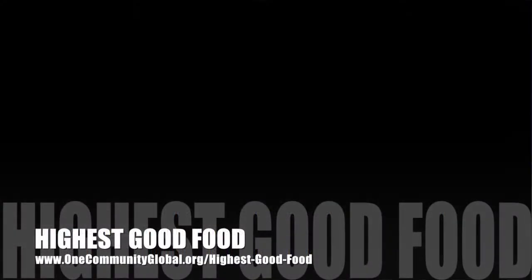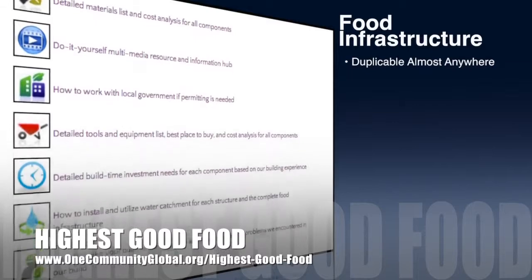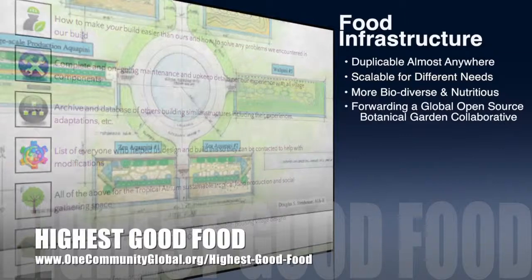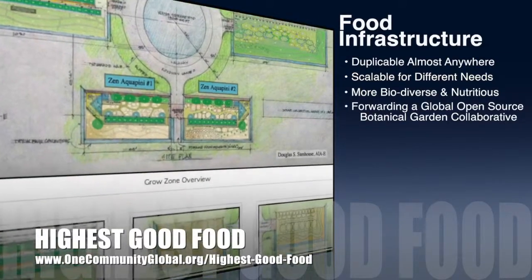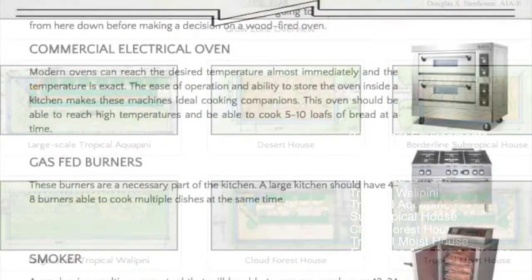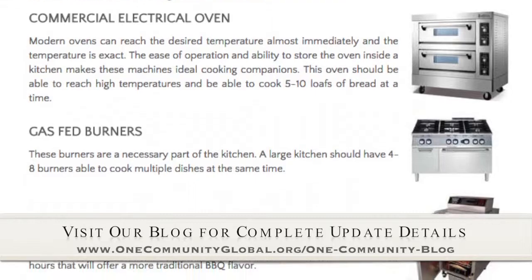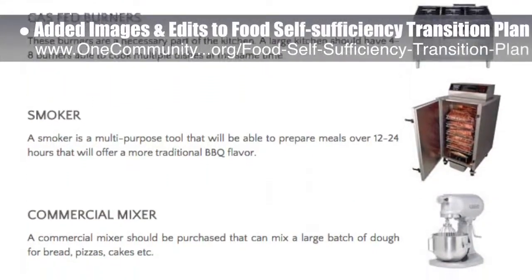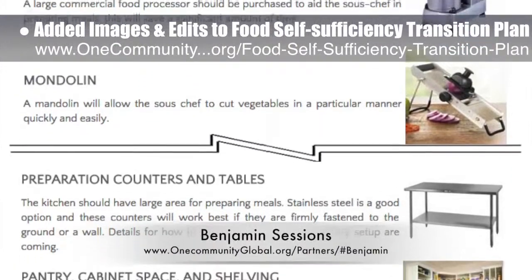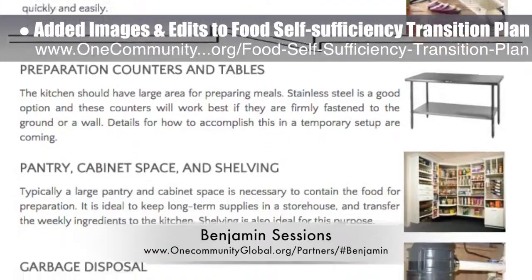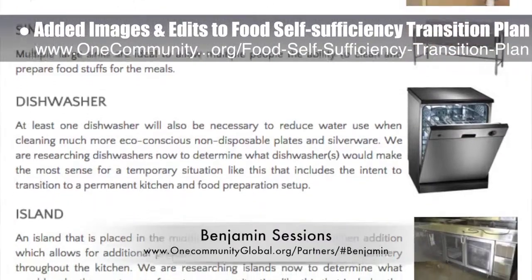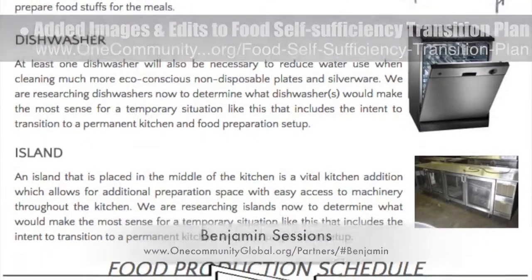OneCommunity's approach to Highest Good Food is duplicable almost anywhere, scalable for different needs, more biodiverse and nutritious, part of forwarding a global open source botanical garden collaborative, and includes nine different free shared and duplicable growing environments. This week, the core team working on Highest Good Food added another round of images and minor edits to the new Food Self-Sufficiency Transition Plan, which is sharing the work of Benjamin Sessions. You can see the new images and edits here, and you can visit the page for all the open source details of remote kitchen construction and food preparation for groups of 20-plus people.